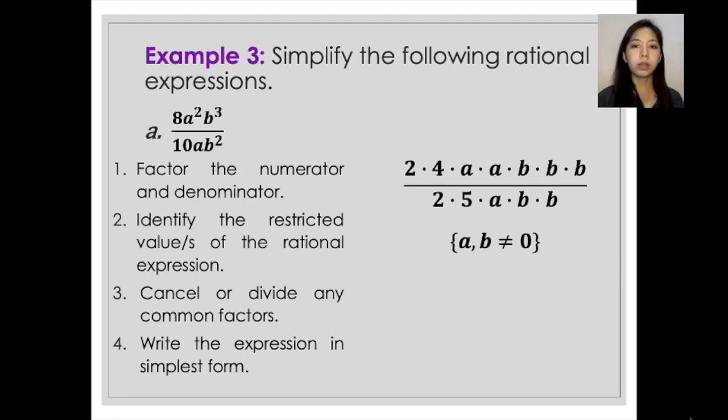So third step is, after identifying the restricted value or values, you are now going to cancel or divide any common factors. And with that, the numbers or the factors that will be canceled out here are 2, a, b, and then the other b.